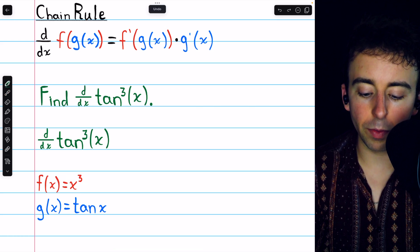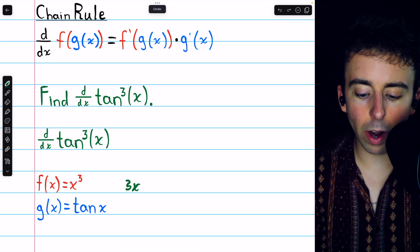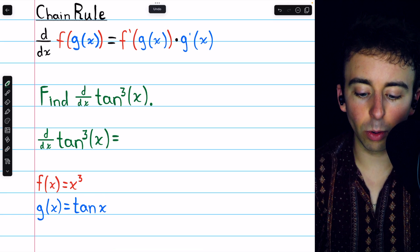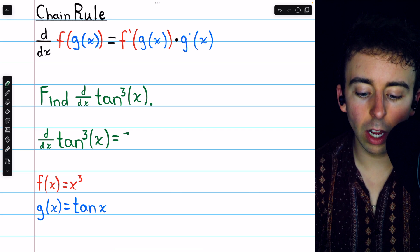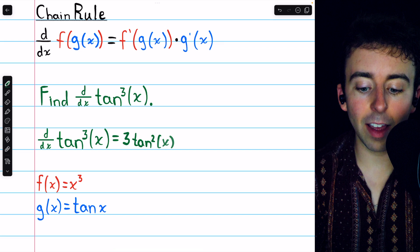Now remember, the derivative of x cubed is just 3x squared, so that's just like what we're going to have, except our inside function is tangent. So instead of 3x squared, we're going to have 3 times tangent squared. That's f prime of g,